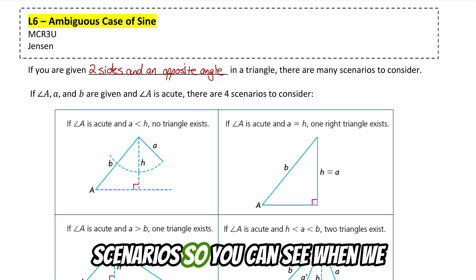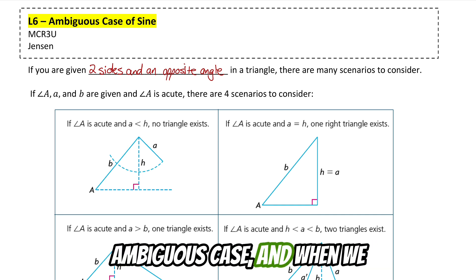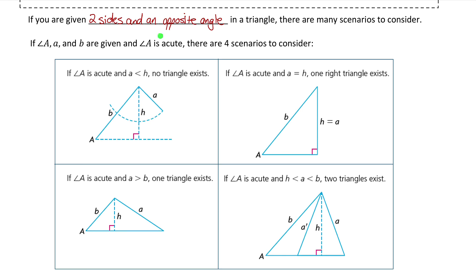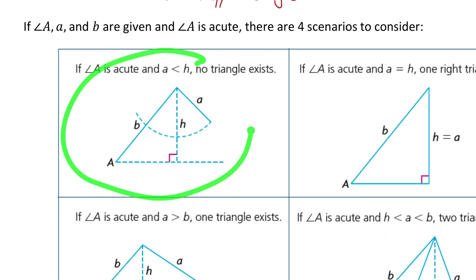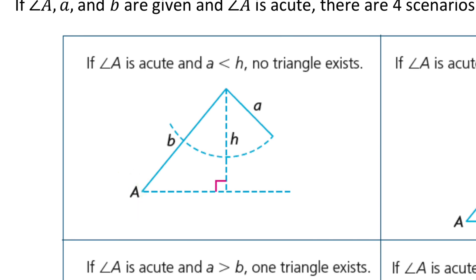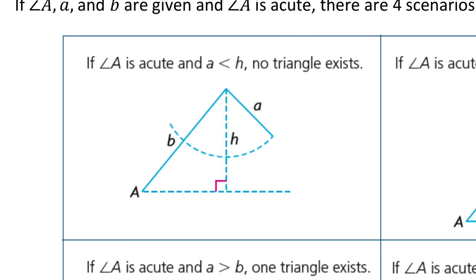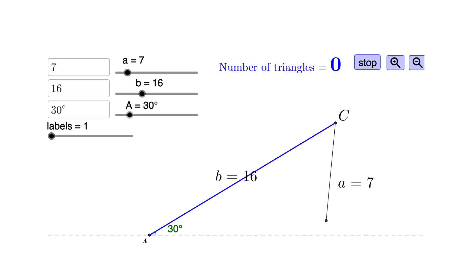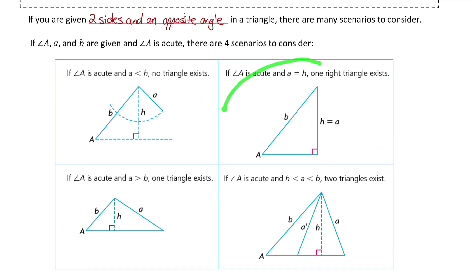Let me take you through a few scenarios so you can see when we would have to consider this ambiguous case and when we don't. Let's start with these first four scenarios, where the given angle, angle A, is acute. In this first scenario, across from the given angle is side A. If that side is less than what the height of the triangle would be, then we wouldn't be able to create a triangle — there would be no triangle that exists. No matter where we swing that side A to, it wouldn't connect to create a triangle that maintains angle A.